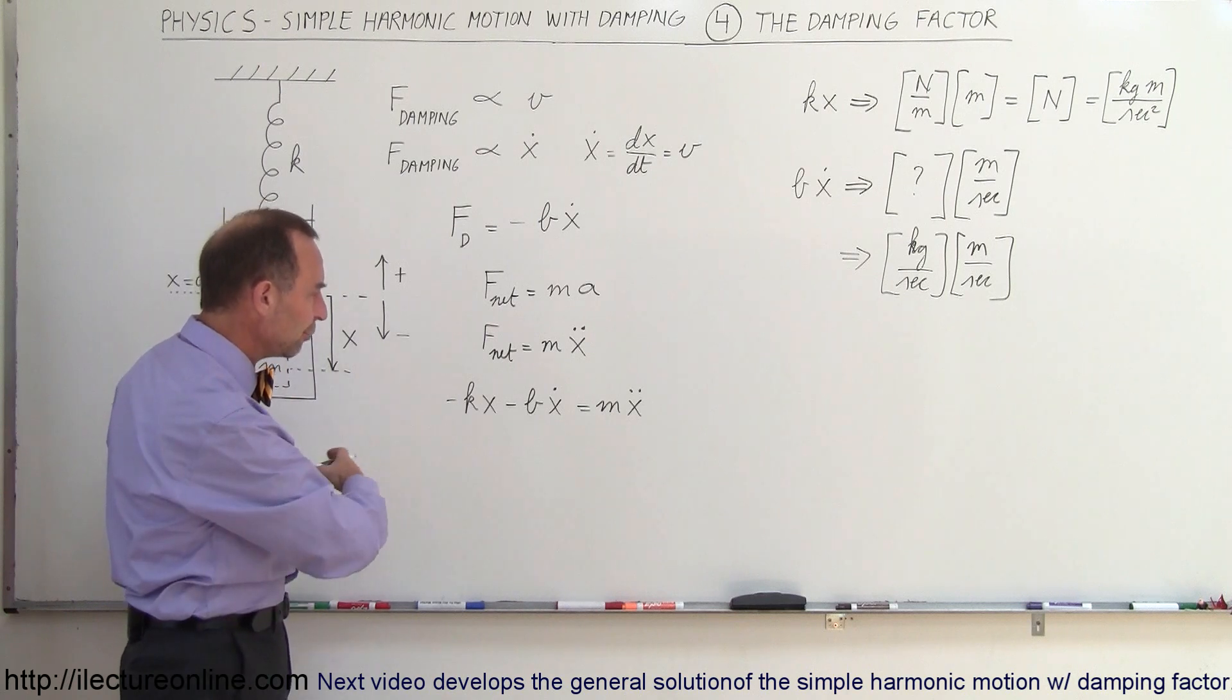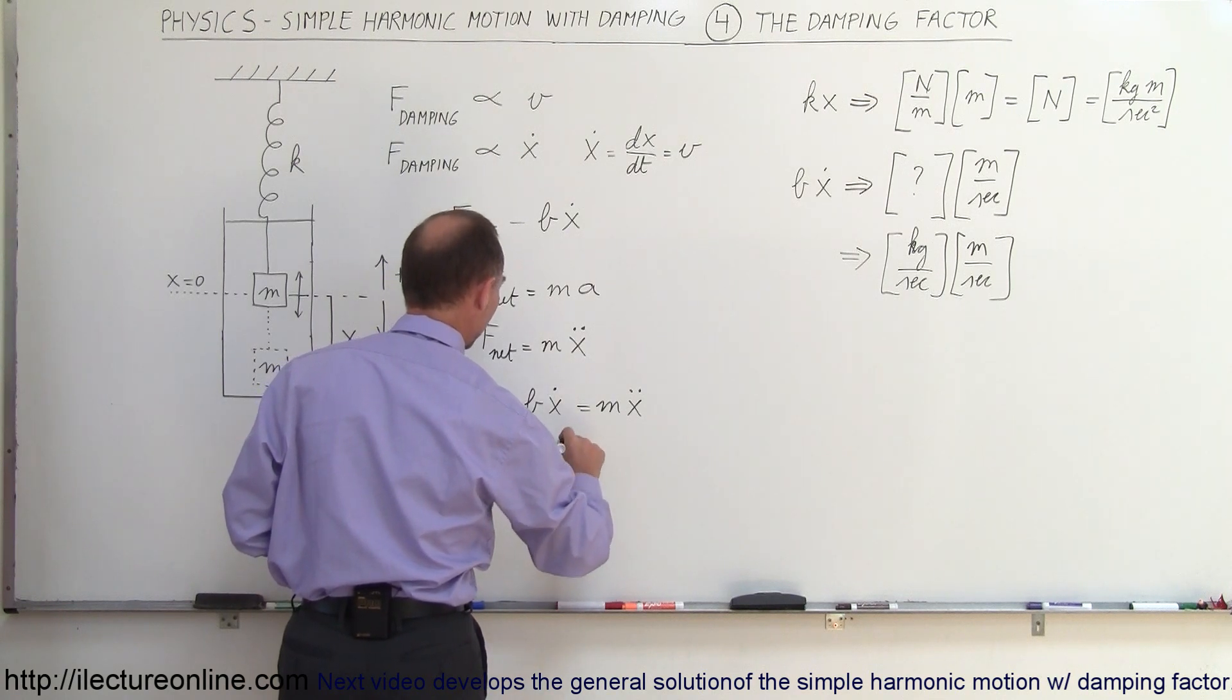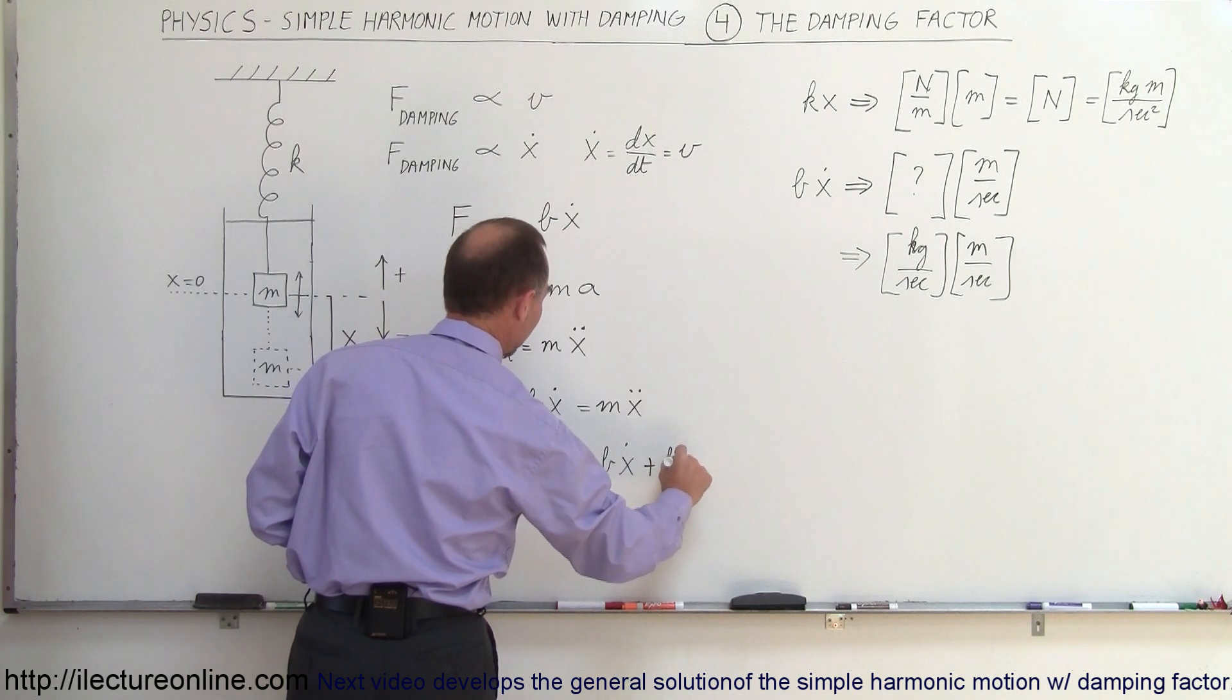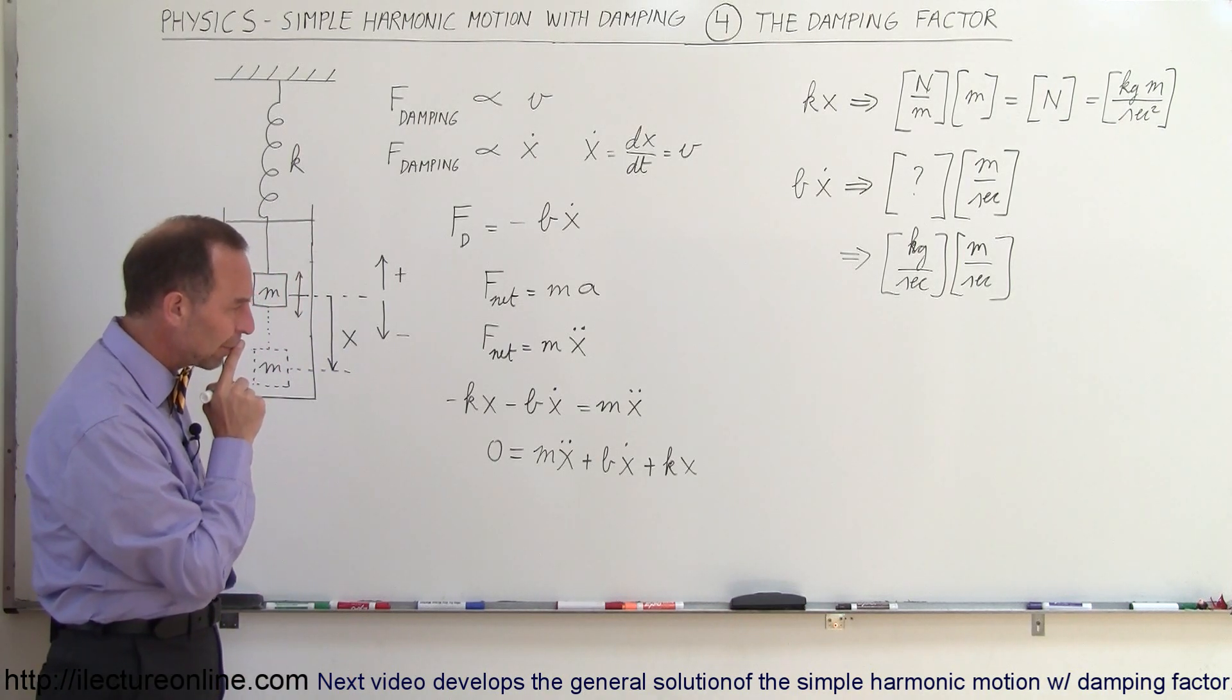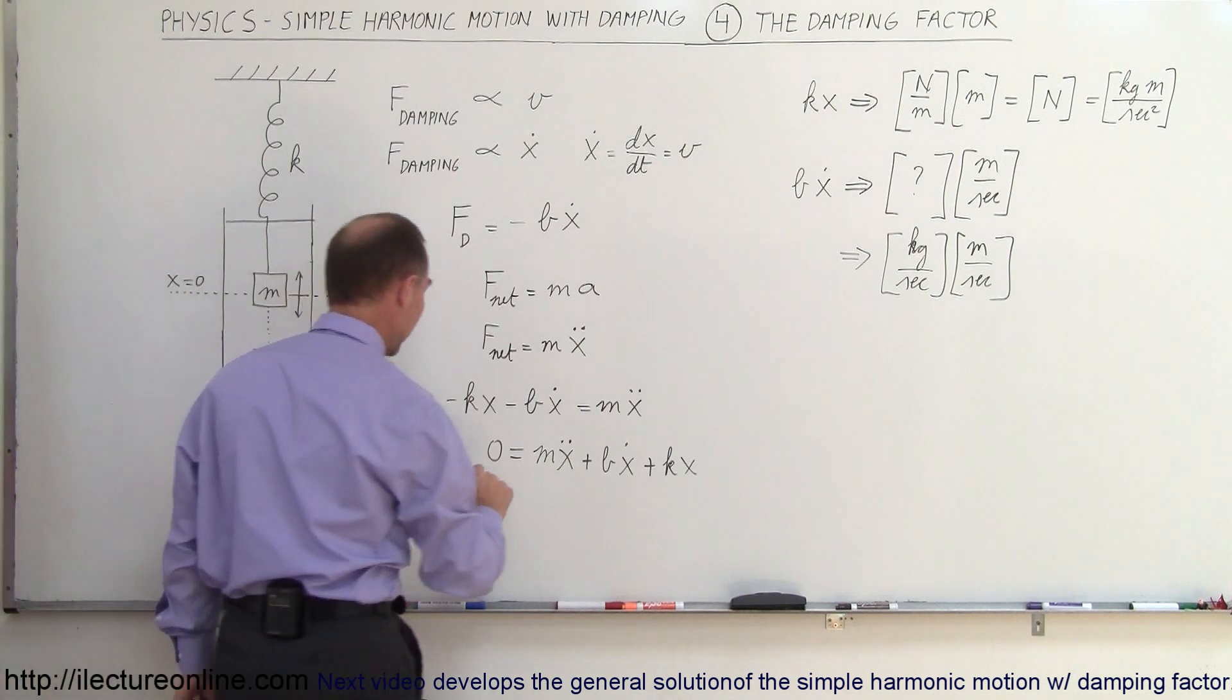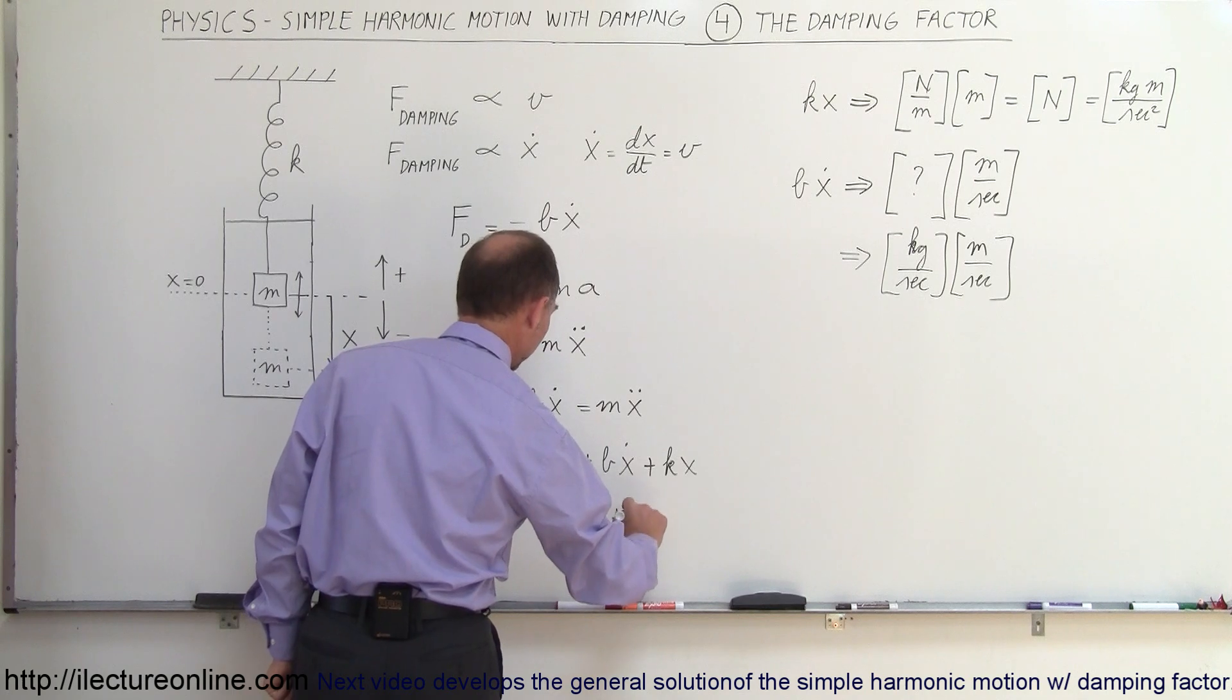One more thing that we want to do is we want to move everything over to one side. So we write it as a more general form of the differential equation. So 0 is equal to m x double dot plus b x dot plus k times x. So now we have a more general form of the differential equation.